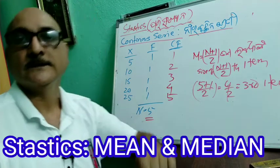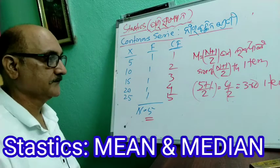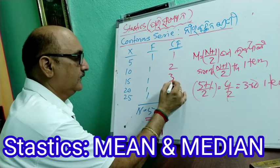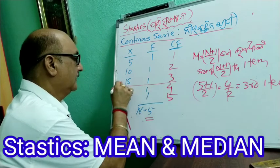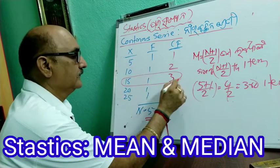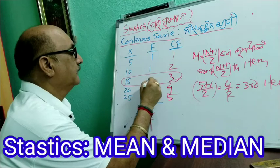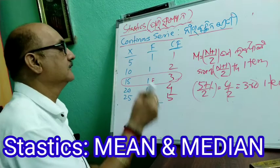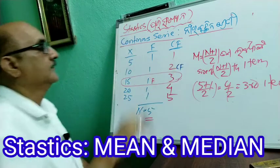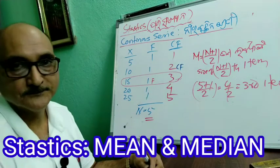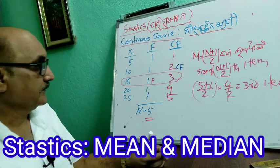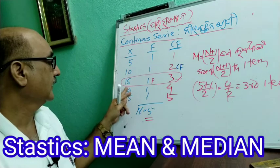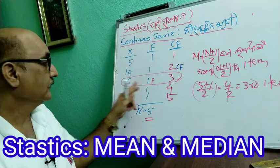This is the size of N plus 1 by 2 to the item. Now you can write N plus 1 by 2. Because if you look at this, you have to go to the table.